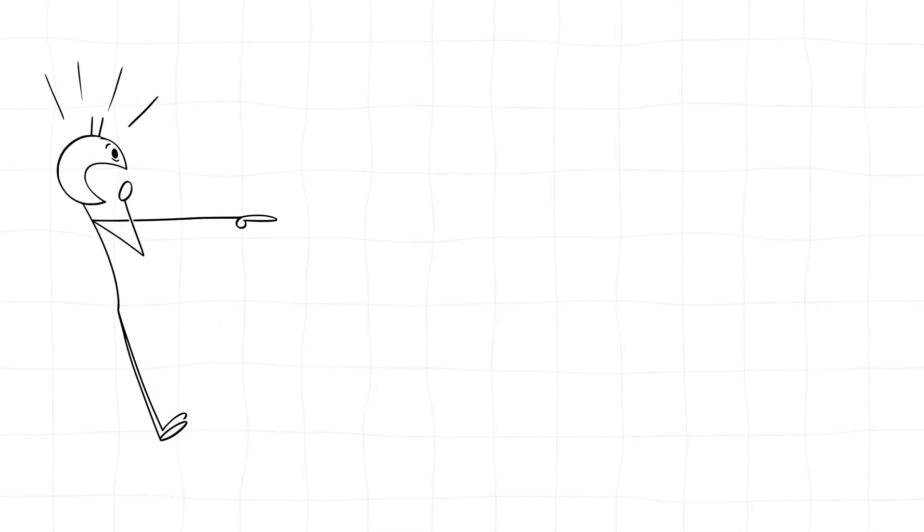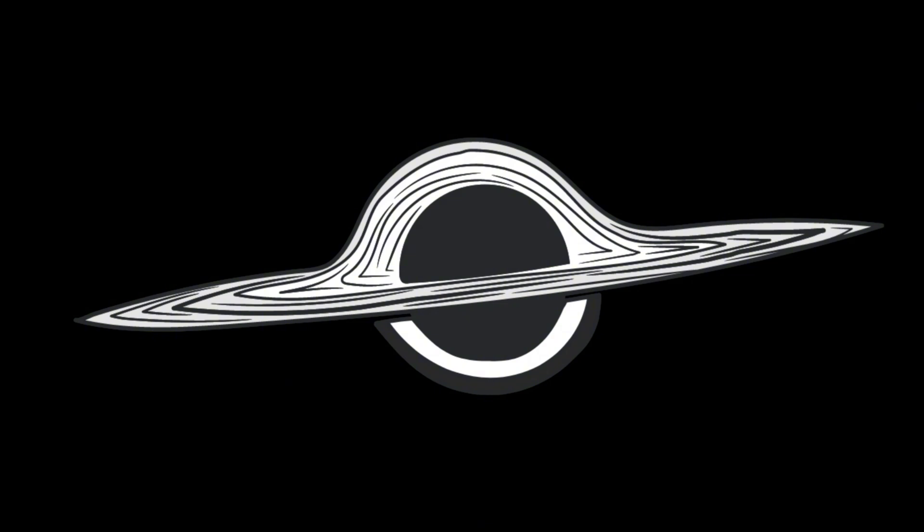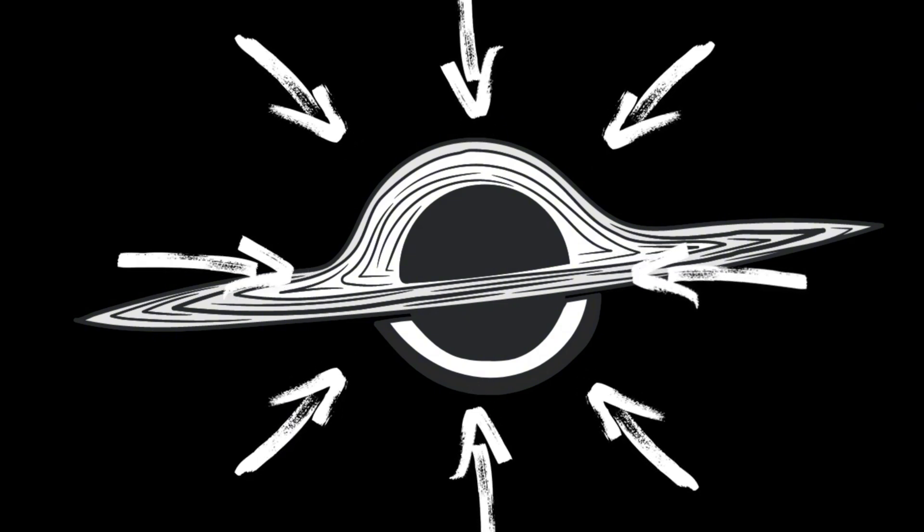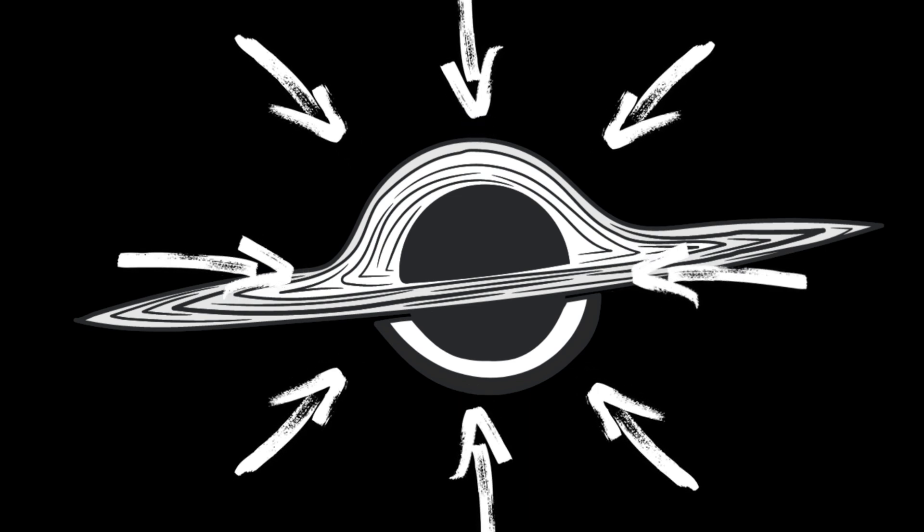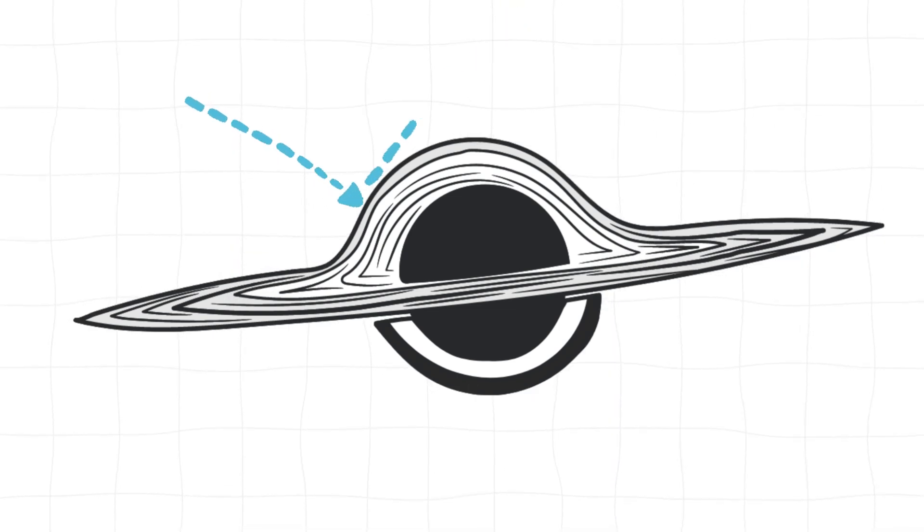And then there's the ultimate symbol of darkness, a black hole. A black hole is so dense, its gravitational pull is so strong, that even light can't escape it. This isn't just the absence of reflected light, it's the absence of light itself.